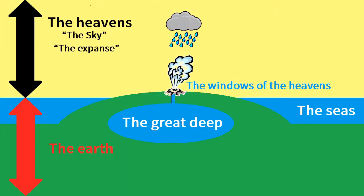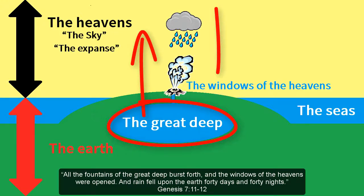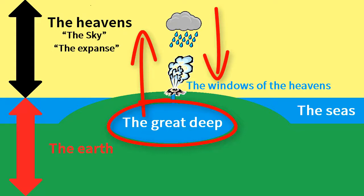Genesis chapter 1 sets the stage for the events of Genesis chapter 7, verse 11: 'All the fountains of the great deep burst forth, and the windows of the heavens were opened, and rain fell upon the earth forty days and forty nights.' The parallelism of fountains of the great deep bursting forth with windows of the heavens opened depicts not holes in a solid dome letting the rain fall downwards, but cracks in the earth letting water burst upwards before falling back to earth.